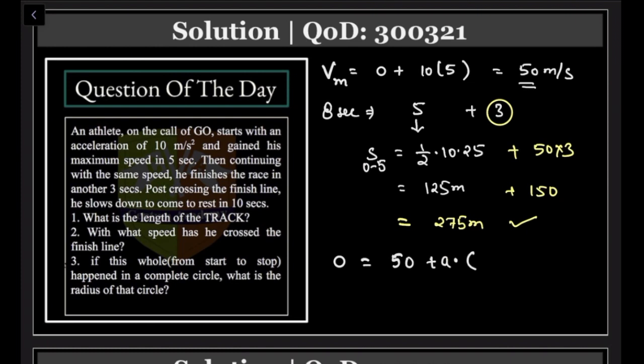So the acceleration is -5 m/s². With what speed has he crossed the finish line? Very easy, 50 m/s.